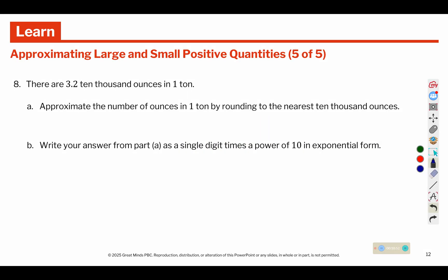There are 3.2 ten thousand ounces in 1 ton. Approximate the number of ounces in 1 ton by rounding to the nearest 10,000 ounces. So this is close to 3 ten thousand or 30,000 is another way to say it. And writing it as a single digit, we use the 3 from the front times the power of 10. Again, there are 4 place values after the single digit.